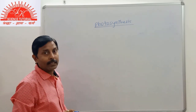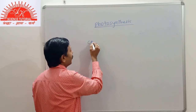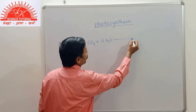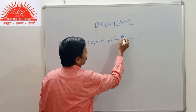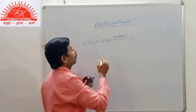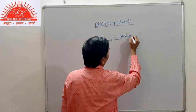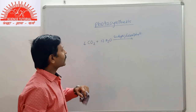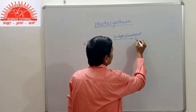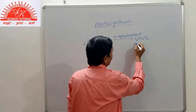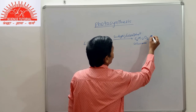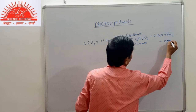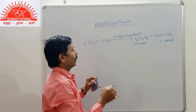For photosynthesis, the equation is: 6CO2 + 12H2O, using sunlight and chlorophyll, gives the products C6H12O6 (glucose) + 6H2O + 6O2 + 2ATP. These are the products — primarily glucose.